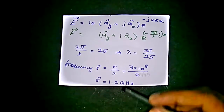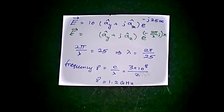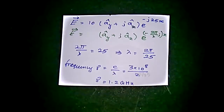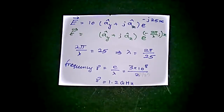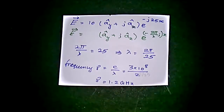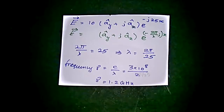So we get 1.2 GHz. The problem asked us to find the frequency as well as the polarization direction. We have now found the frequency value. The other part of the problem is to find the polarization.